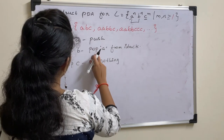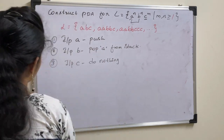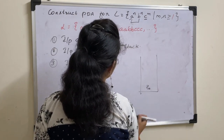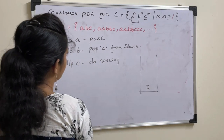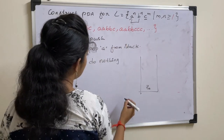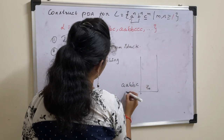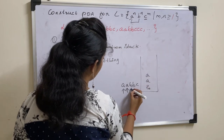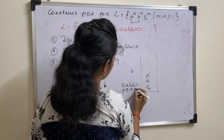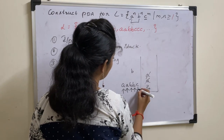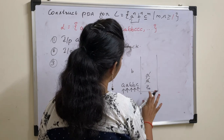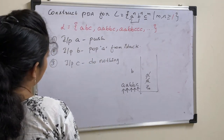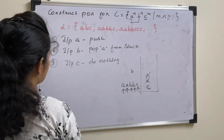You can repeat steps 1 and 2 based on the given string. Take a stack with initial element Z naught. For the string AABBC: for the 1st A, push; for the 2nd A, push A onto the stack. For the 1st B, pop; for the 2nd B, pop A. For C, do nothing — no push or pop is performed. The stack then remains empty, and if we pop Z naught also, that completes the logic.